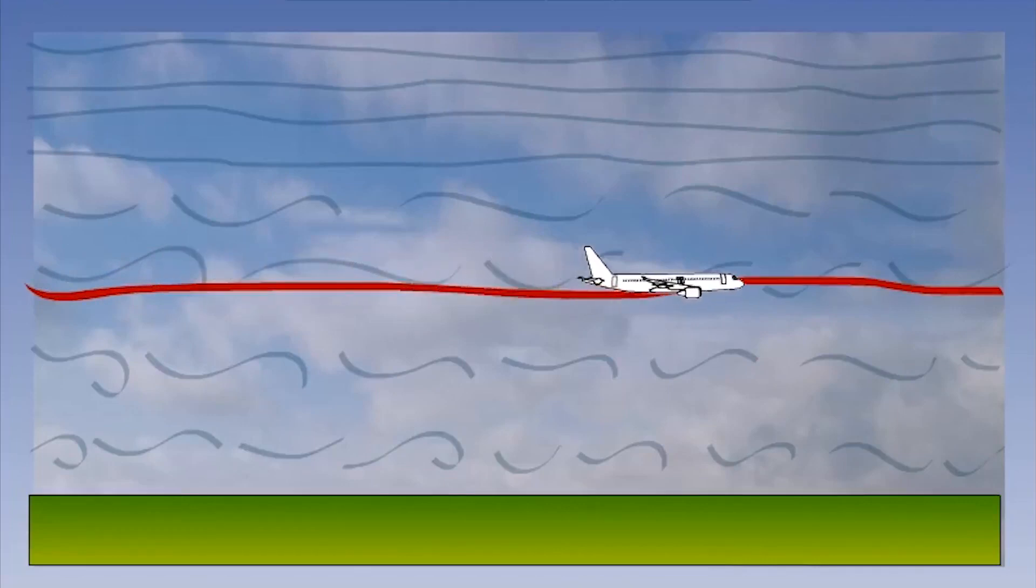For the purpose of a definition, we will consider turbulence to be variations in the wind along the aircraft's flight path of a pattern, intensity and duration that disturb the aircraft's attitude about its major axes but do not significantly alter its flight path.